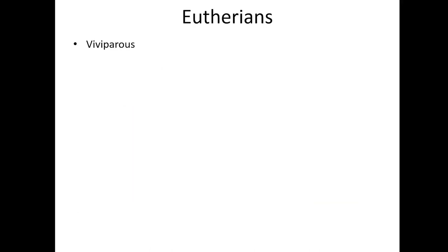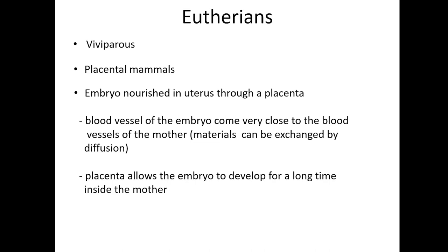Eutherians are viviparous, meaning that the offspring are carried in the mother's uterus until fully developed. Eutherians are commonly called placental mammals since they are characterized by the development of a placenta, and the embryo is nourished through it. Blood vessels of the embryo come very close to the blood vessels of the mother so that materials can be exchanged by diffusion. The placenta allows the embryo to develop for a long time inside the mother and to be born at a more mature stage than marsupials.